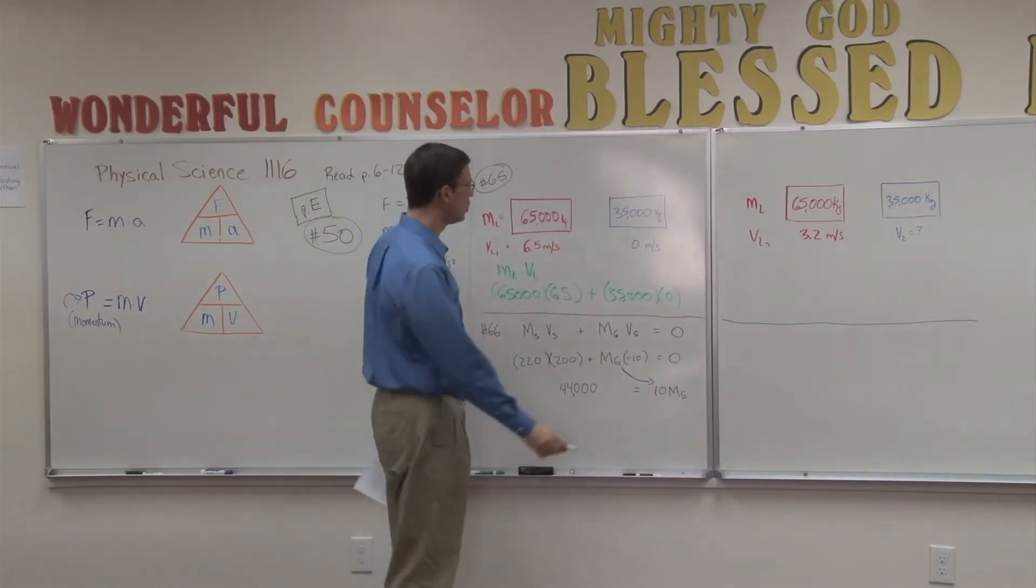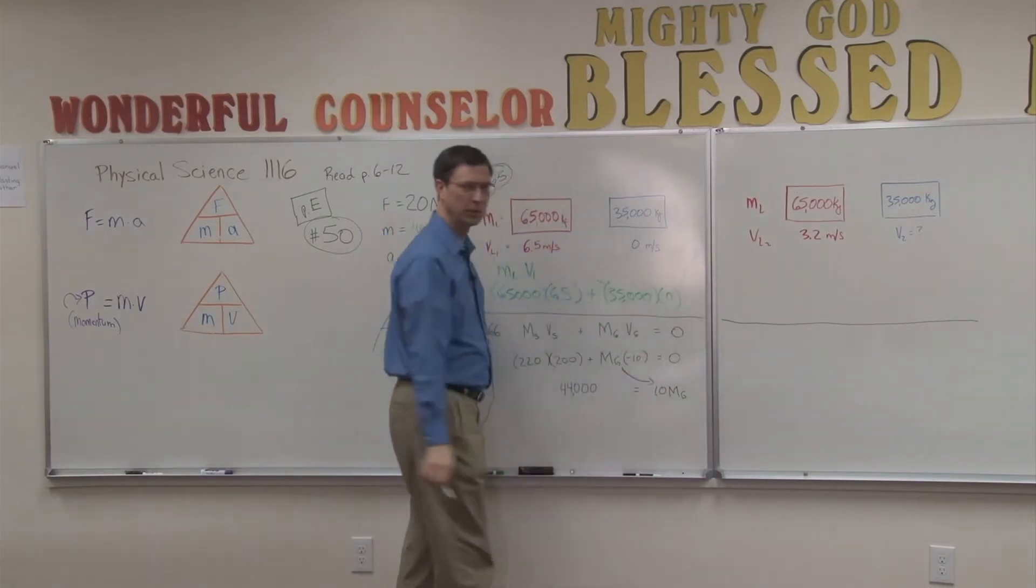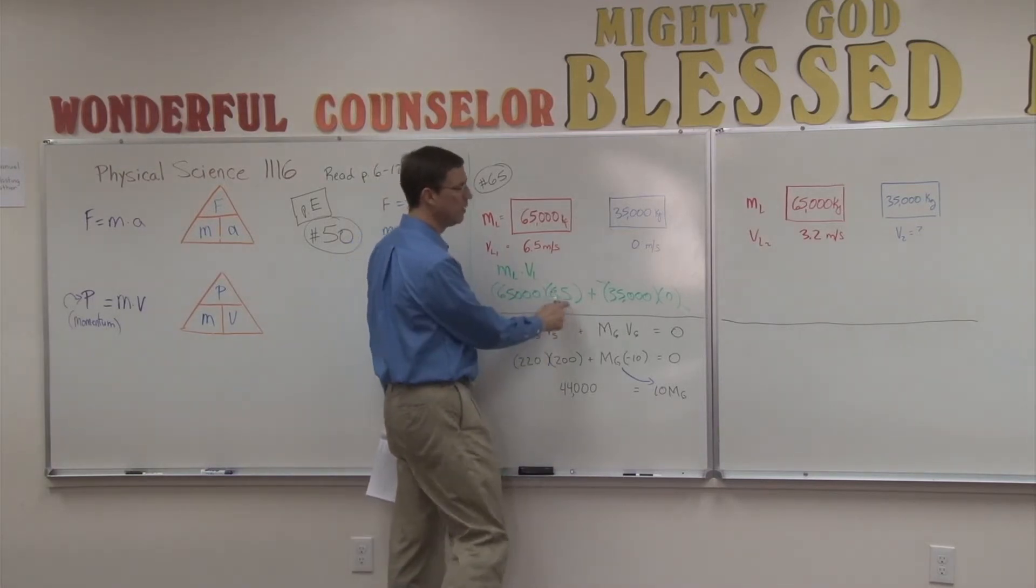We're going to add 35,000 times its velocity, which is zero. So this whole thing just becomes zero. So really all we have to solve for is this to get the number.